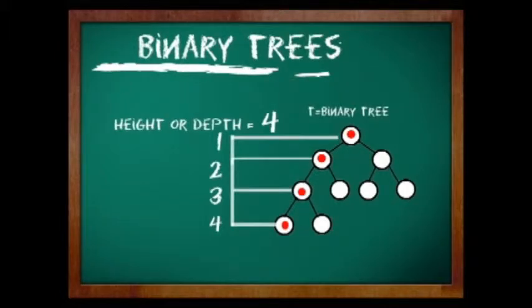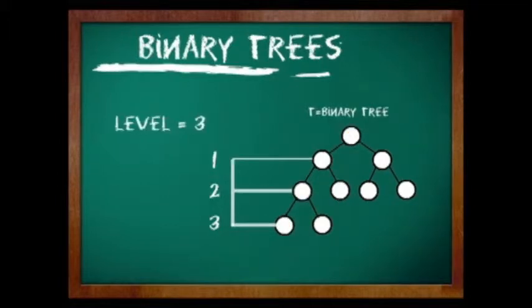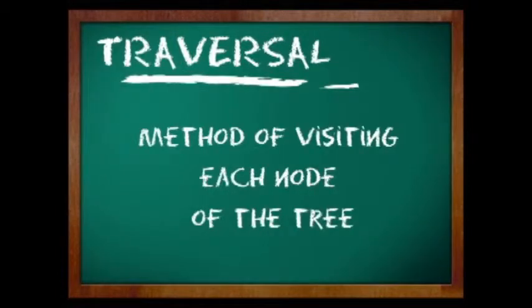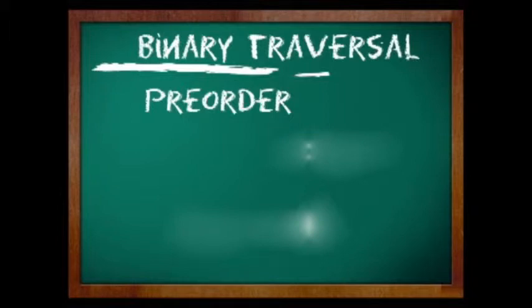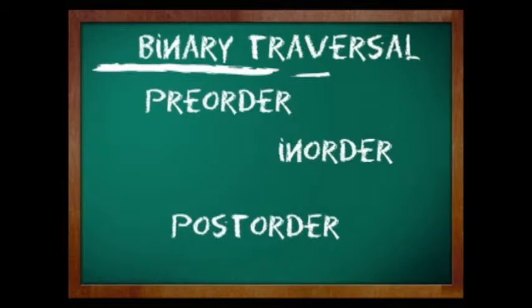This example shows level 4 of the tree. Level of a node refers to the distance of the node from the root; hence, the root of the tree has a level of zero. Traversal is a method used to visit each node of a binary tree. There are three ways to traverse a tree: the pre-order, the in-order, and the post-order.